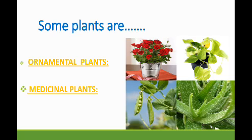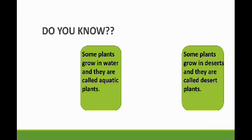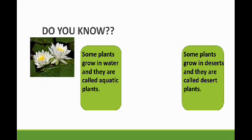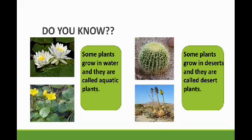Do you know that plants which grow in water are called aquatic plants? Just as the animals which live in water are called aquatic animals, plants which grow in water are called aquatic plants. Examples of aquatic plants: first is water lily, and second is floating heart. Some desert plants: first is barrel cactus, and the second is desert agave.